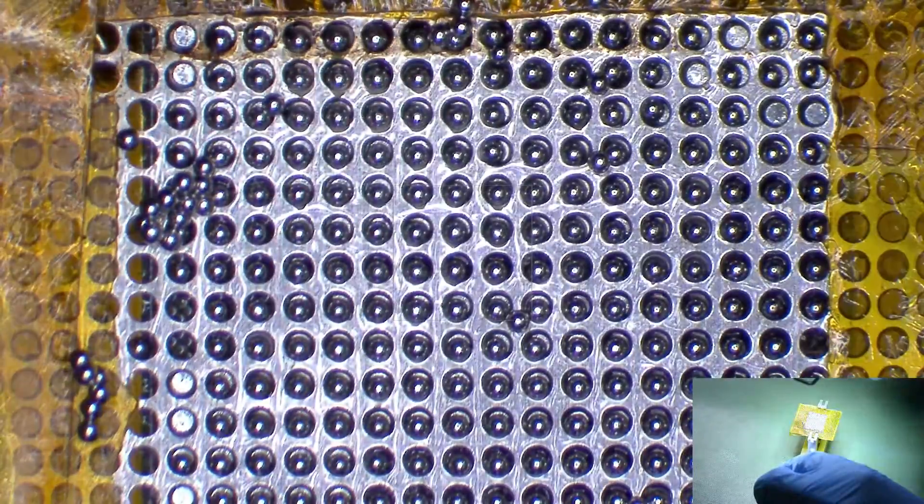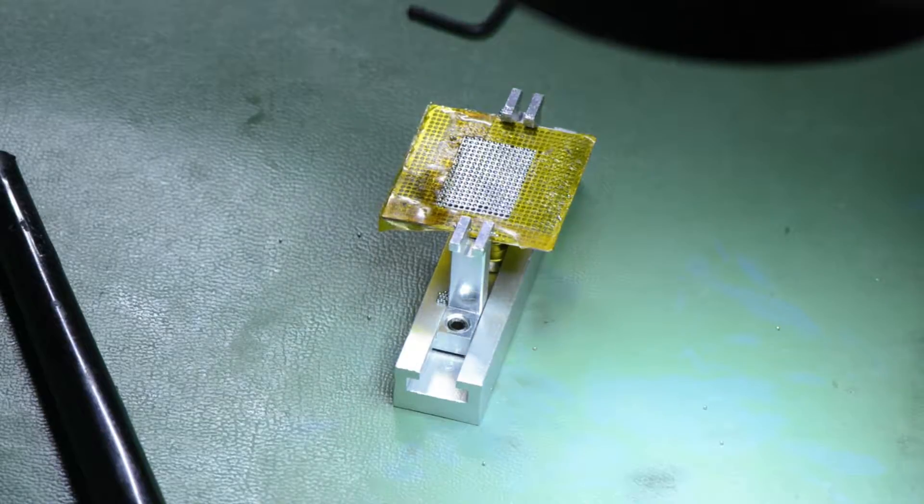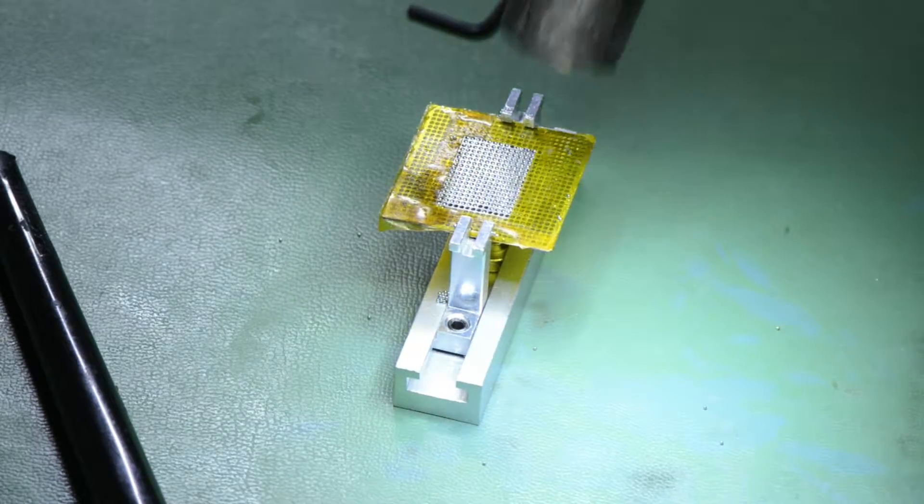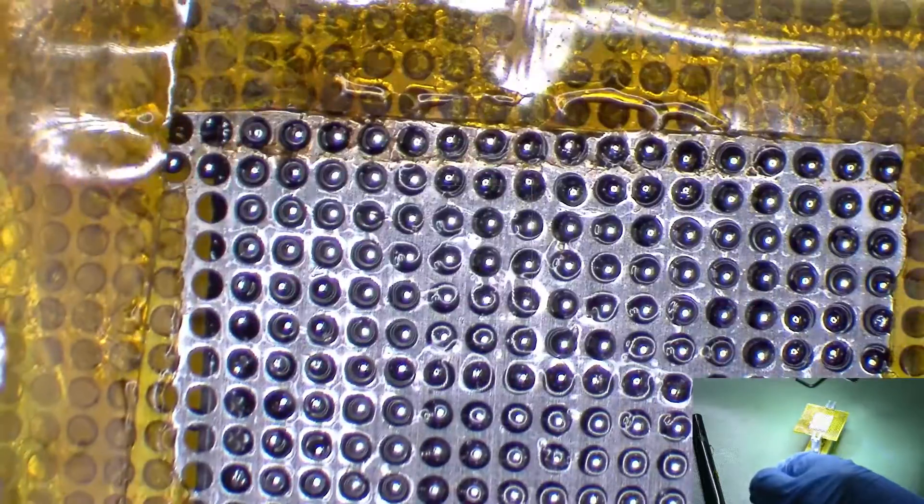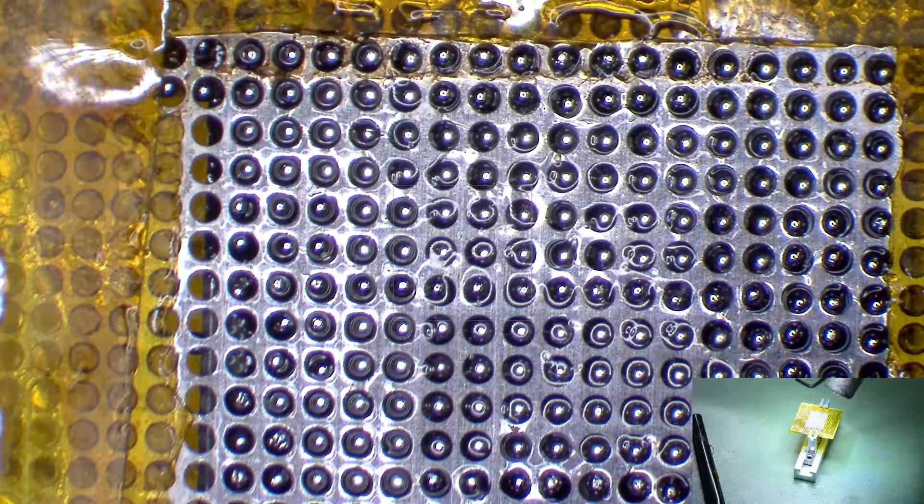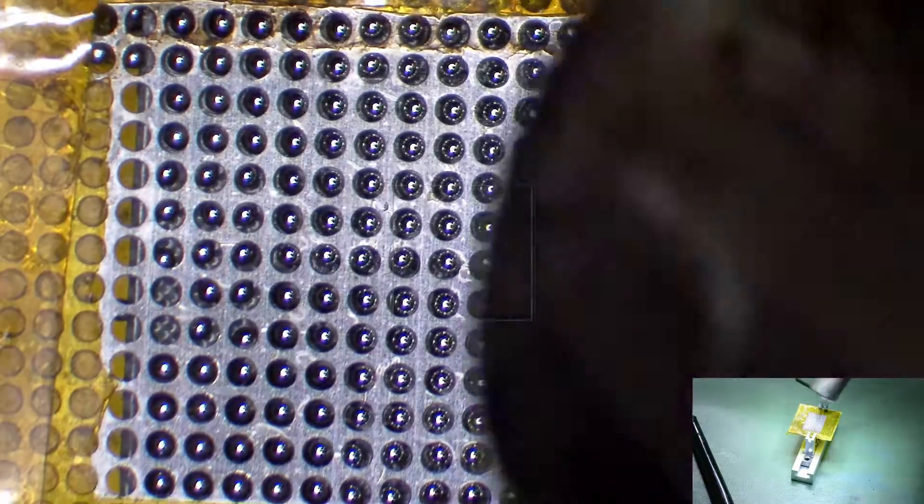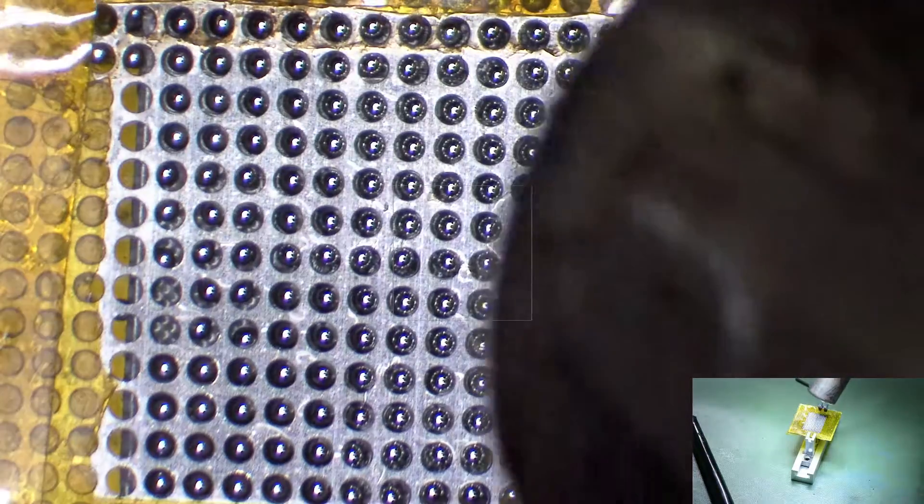Next, apply solder balls. I'm using my finger, but you can also use a spatula tool. Now we heat up the solder balls using a hot air rework station. Once the solder turns a molten silver color, we know it's done.